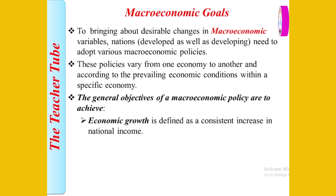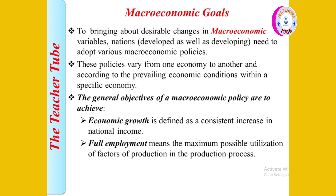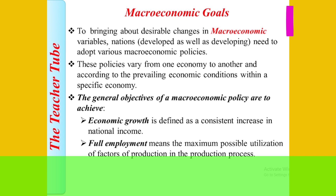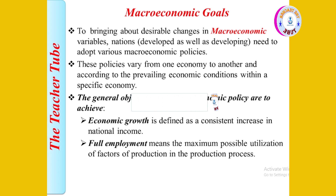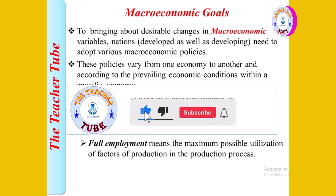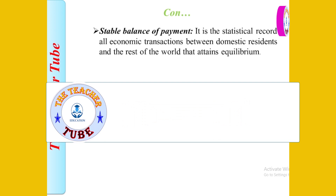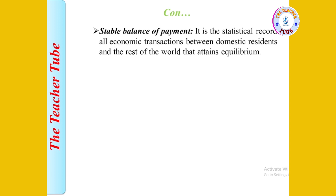The macroeconomic goals include economic growth and full employment. Full employment means the maximum possible utilization of factors of production — including labor, land, and machinery — in the production process. Another goal is a stable balance of payments, which is the systematic record of all economic transactions between domestic residents and the rest of the world, attaining equilibrium.